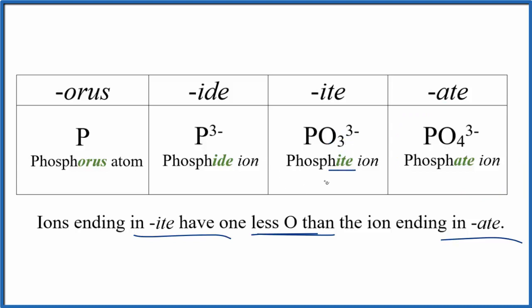And this rule works with other polyatomic ions like sulfate and sulfite or nitrate and nitrite. So it's really useful. Memorize the A-T-E, which is usually one you'll see more often, and then you know the I-T-E just has one less oxygen.